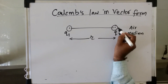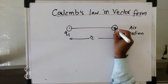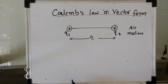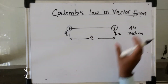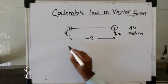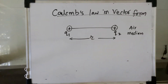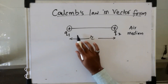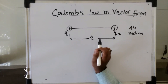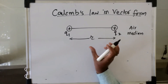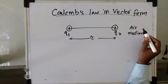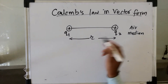Suppose Q1 and Q2 are the positive charges. Now, what is the Coulomb's law statement? Coulomb's law states that there is always a force of attraction or repulsion between two electric charges when they are placed in a certain medium — it may be an air medium, water medium, or any dielectric medium.